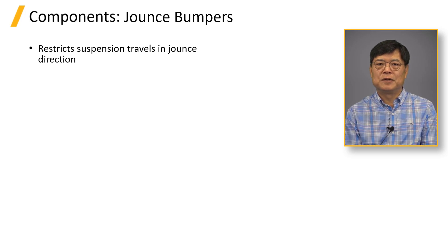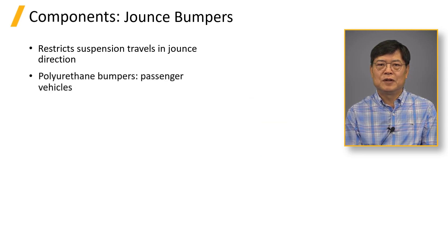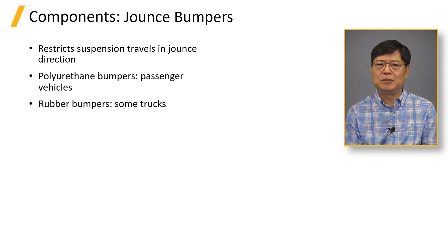The slide shows a jounce bumper's drop test data. Force versus deflection curves come from a drop test. A quasi-static measurement data cannot represent the physics of the jounce bumper. Passenger vehicles use polyurethane bumpers which have soft entry feel and build up stiffness substantially. This is good for rough road ride where small jounce bumper engagement does not generate huge forces. But this is weak in high load where small deflection at the end of the travel increases the force significantly. The rubber jounce bumper has a harsher ride but high load capability, since small deflection at high force absorbs more energy than the polyurethane bumper.